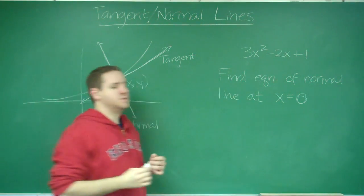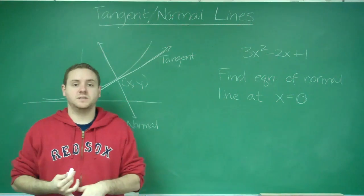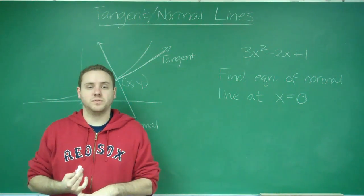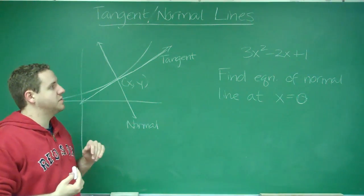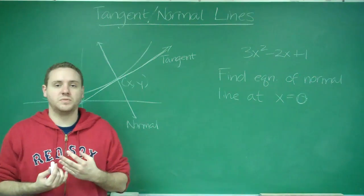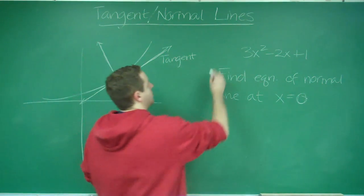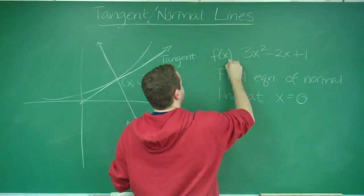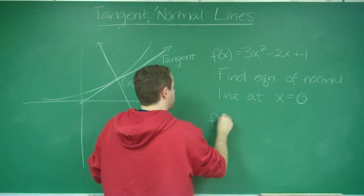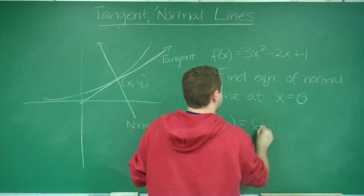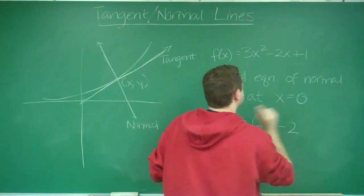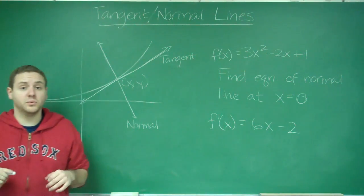What we need to do first is find the slope of the tangent line, because then we can find the slope of the normal line. In taking the derivative of this, we are going to get the slope of the tangent line. Let's call this f(x). So our f'(x), our derivative, would be 6x - 2 using our power rules.